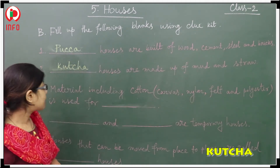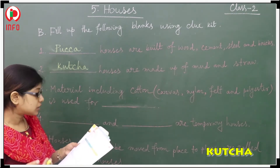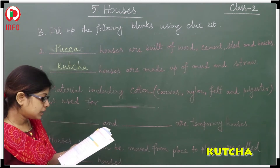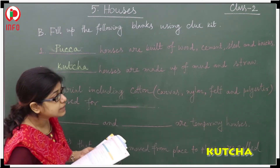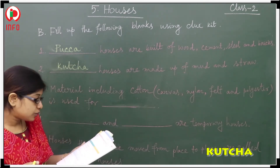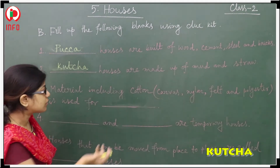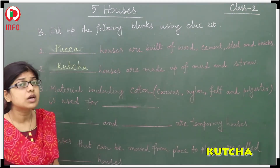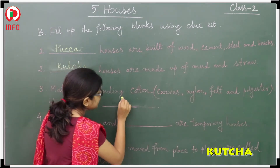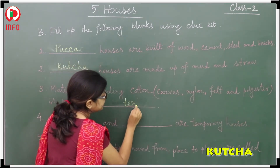The third blank: material including cotton, canvas, nylon, felt, and polyester is used for dash. What should be the answer? Cotton, canvas — this is used to make tents. So the answer should be tents.